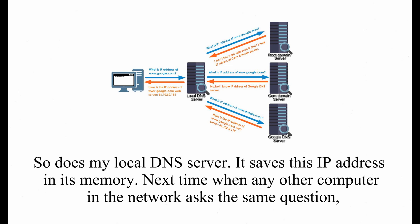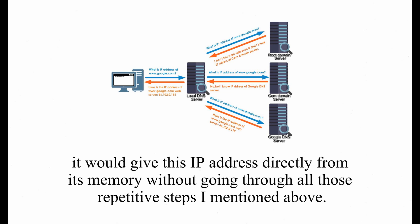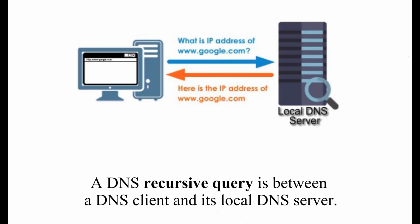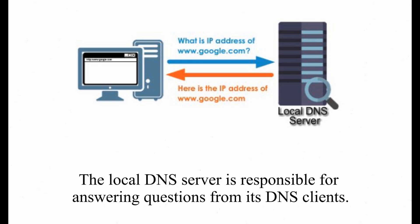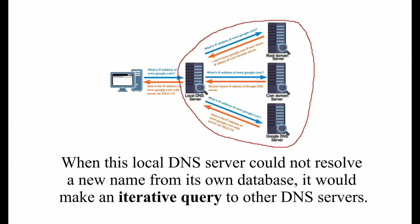Next time, when any other computer in this network asks the same question, it would give this IP address directly from its memory, without going through all those repetitive steps. In summary, DNS recursive query is between a DNS client — which is my computer — and my local DNS server. The local DNS server is responsible for answering questions from DNS clients. When the local DNS server could not resolve a name from its own database, it will make an iterative query to other DNS servers until it finds the answer. I hope this video is helpful. Thank you very much, and see you next time.